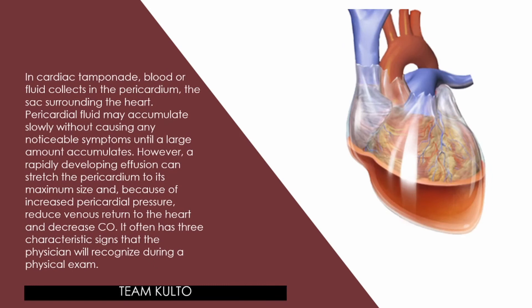Let me give you an overview of cardiac tamponade. In cardiac tamponade, blood or fluid collects in the pericardium. The pericardium is the sac or membrane that protects our heart. This is an illustration of what cardiac tamponade looks like. In our heart, there is a membrane called the pericardium. What happens in cardiac tamponade is that there is an abnormal accumulation of fluid inside that sac, which causes the space for the heart to pump blood to decrease — the heart cannot function properly.